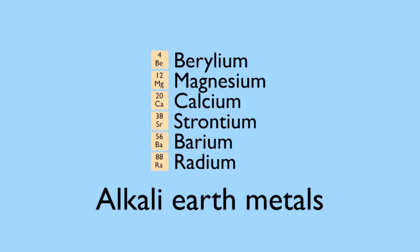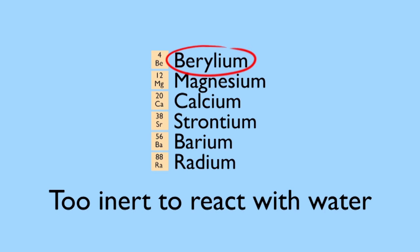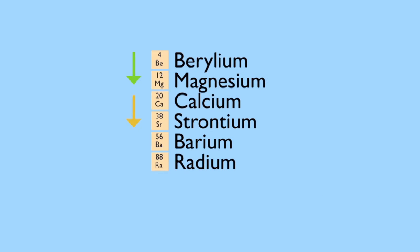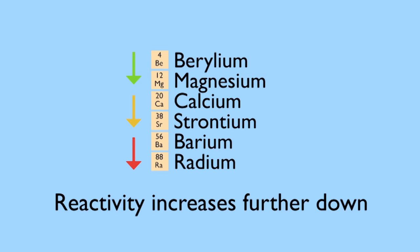Moving on to group two, the alkali earth metals, things are a little different. The metal at the top of the group, beryllium, is too inert to react with water. Magnesium just below it reacts only very slightly. But again, consider the reactivity trend, it increases going down the group.